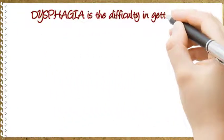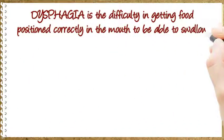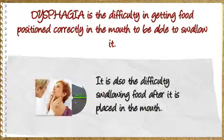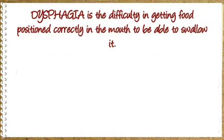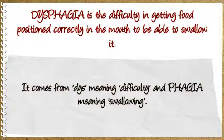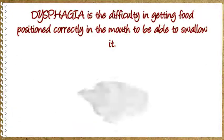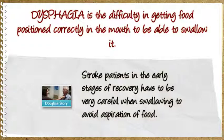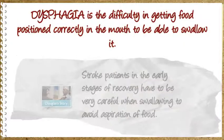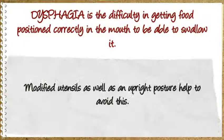Dysphagia is the difficulty in getting food positioned correctly in the mouth to be able to swallow it. It is also the difficulty swallowing food after it is placed in the mouth. It comes from dys meaning difficulty and phagia meaning swallowing. Stroke patients in the early stages of recovery have to be very careful when swallowing to avoid aspiration of food. Modified utensils as well as an upright posture help to avoid this.